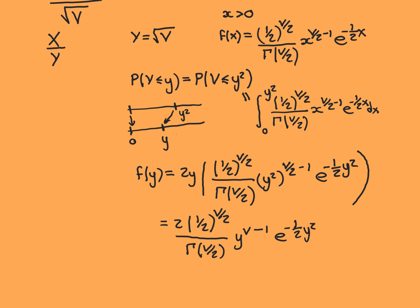Simplifying: we bring the 2y factor in, multiply 2 by nu over 2 to get nu, subtract 2 for the exponent but the y to the power 1 from the 2y cancels one of those, leaving y to the power of nu minus 1. The result is: two times one half to the power of nu over 2, divided by gamma of nu over 2, times y to the power of nu minus 1, times e to the negative one half y squared. This is the PDF of Y on the positive real line; it is zero on the negative real line.